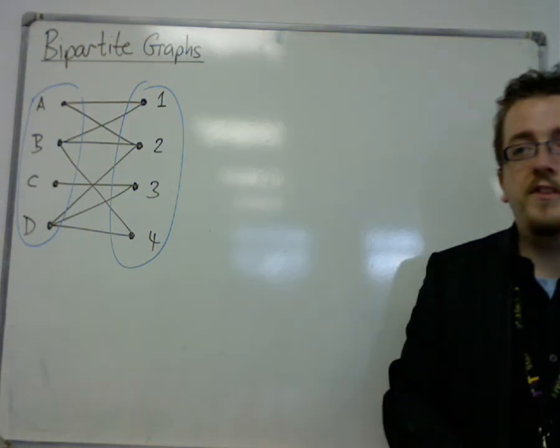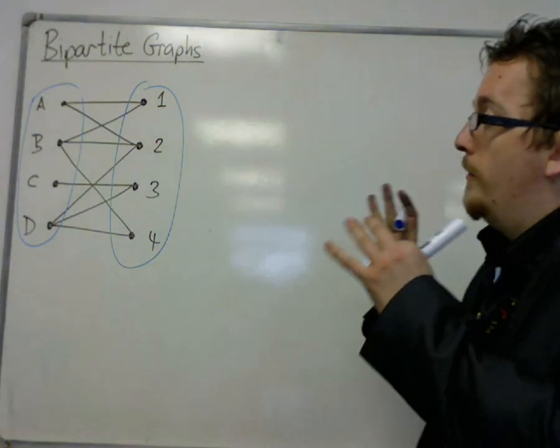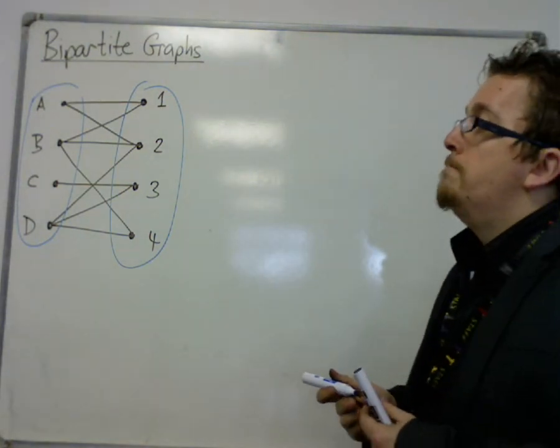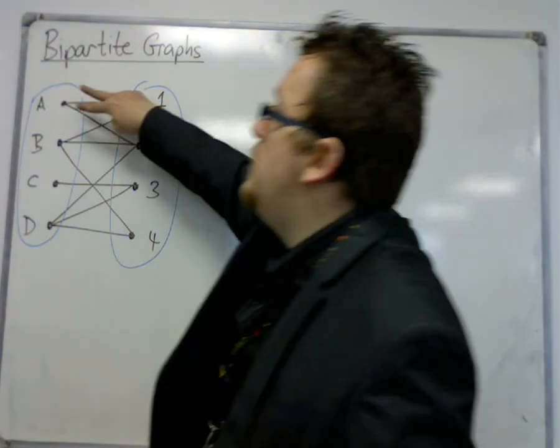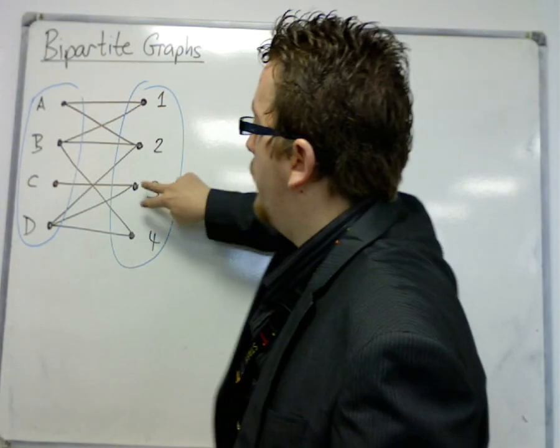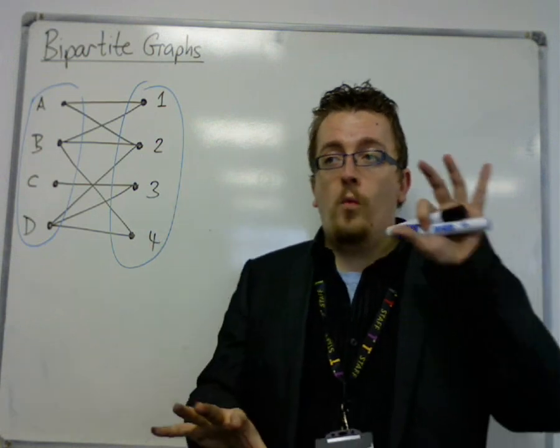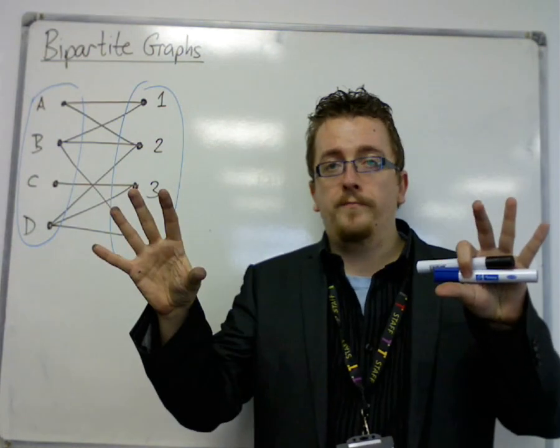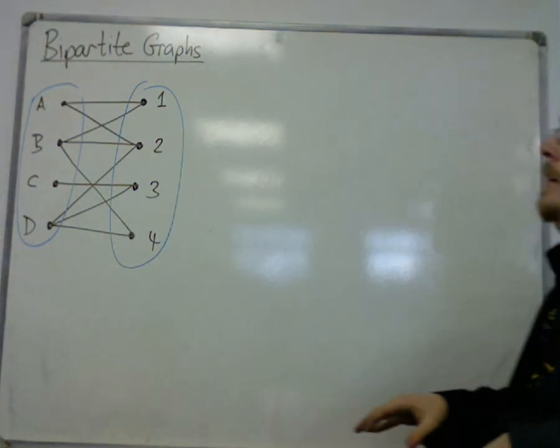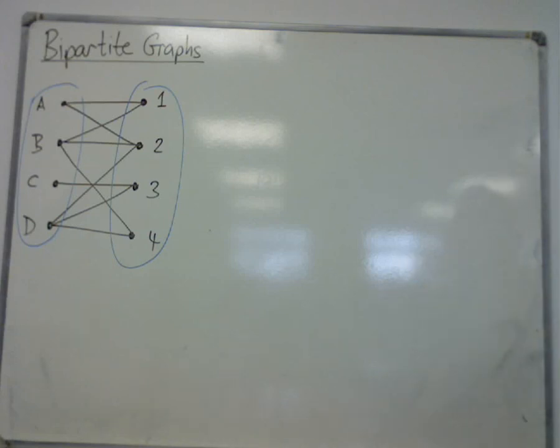Two sets, a partition, two sets of vertices that are not actually individually connected to each other, but two sets such that one set is connected to the other. It can be separated as such. So this is a bipartite graph.